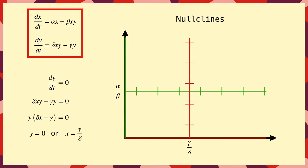Okay, so we know the x and y nullclines. Now, the next step is to find the stationary points, the steady states where the system doesn't move. And these are where the two sets of nullclines meet.